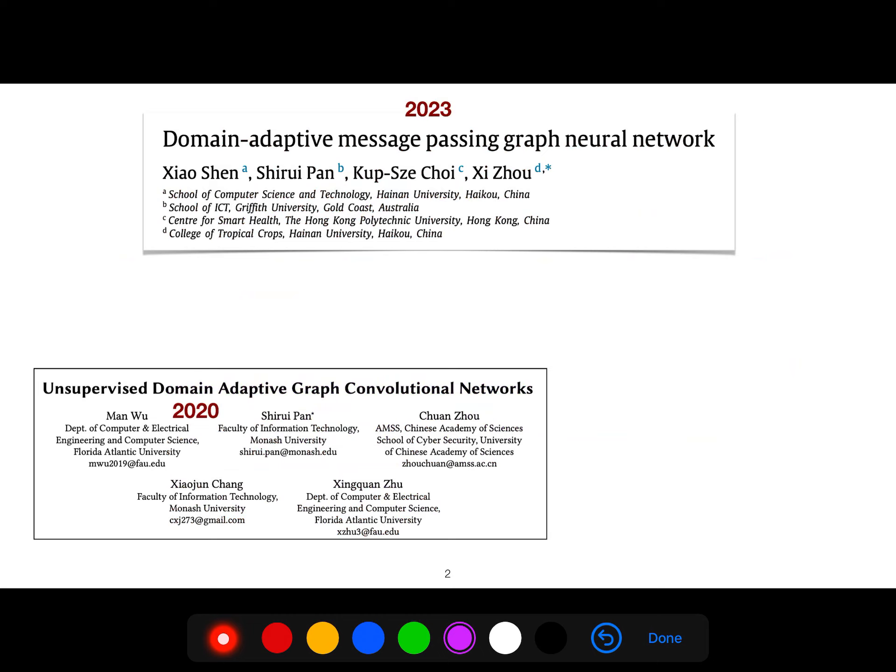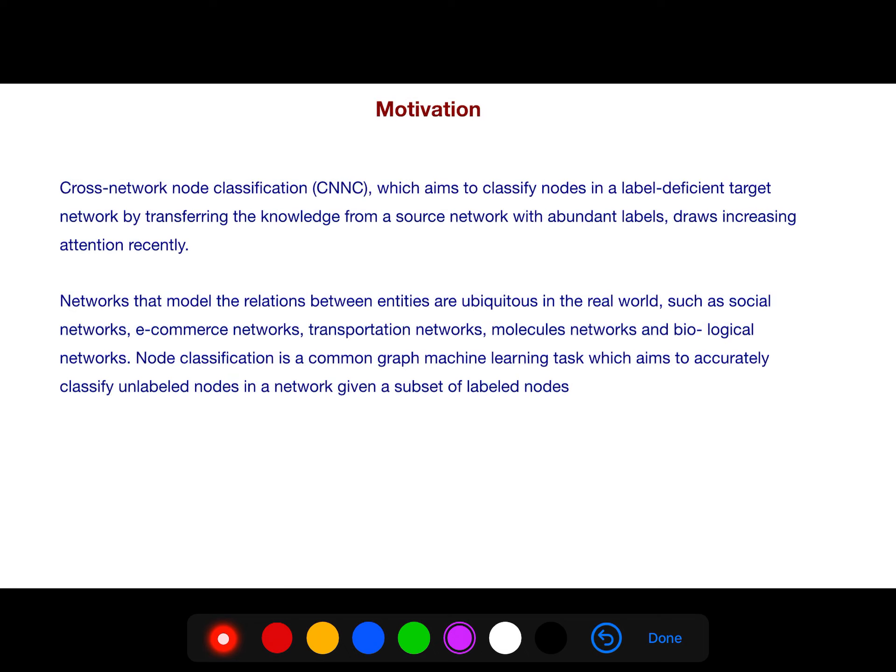This paper is from 2023 and is relevant to cross-network node classification, which aims to classify nodes in a label deficient target network by transforming knowledge from a source network with abundant labels. Networks that model relations between entities are ubiquitous in the real world, such as social networks, e-commerce networks, transportation networks, molecules, and biological networks. Node classification is a common graph machine learning task which aims to accurately classify unlabeled nodes in a network given a subset of labeled nodes.